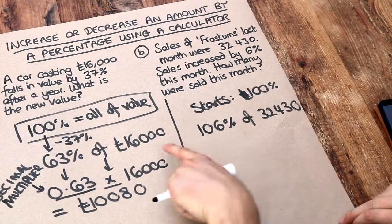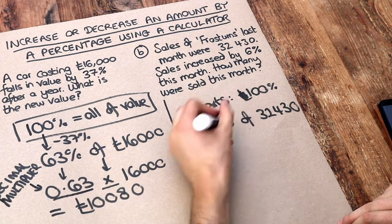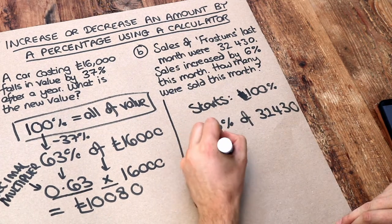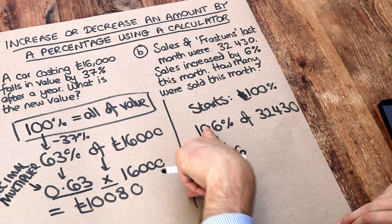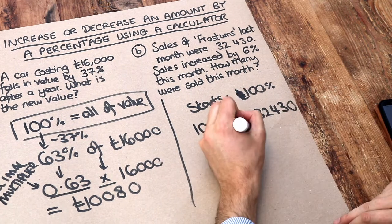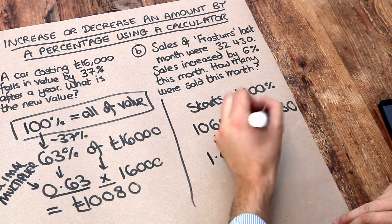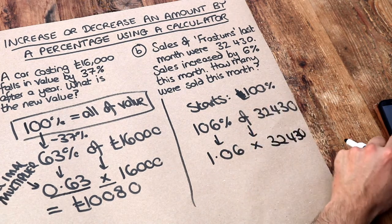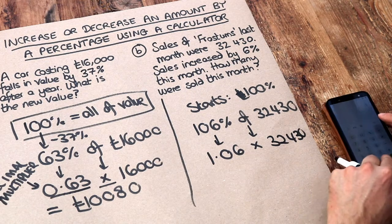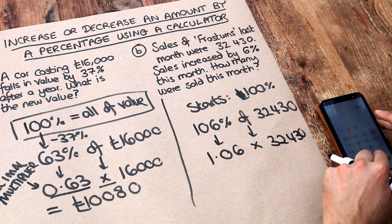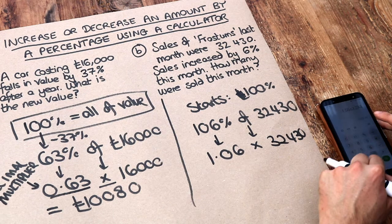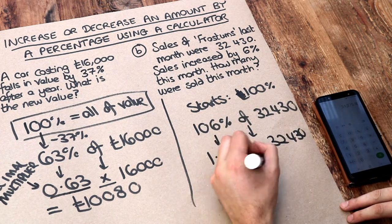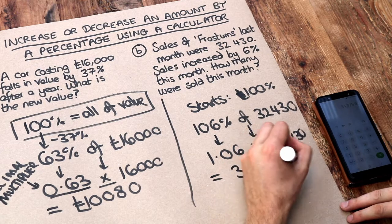So as before we need to turn that percentage into a decimal. So 106% as a decimal is 1.06. Just remember that we divide this by 100. The word of we can turn into times and then we've got that value here. I do that on my calculator. We've got 1.06 multiplied by 32,430. And that is equal to 34,375.8.